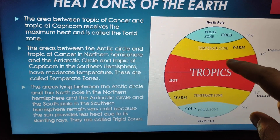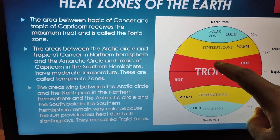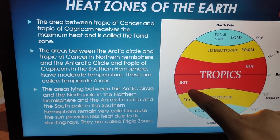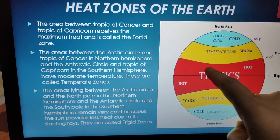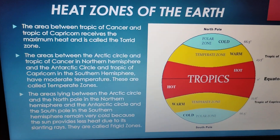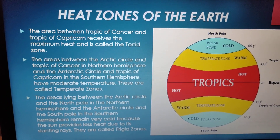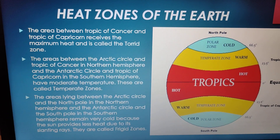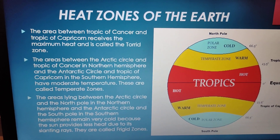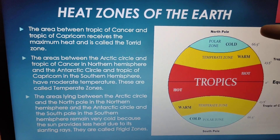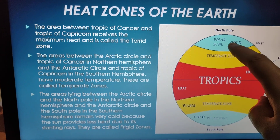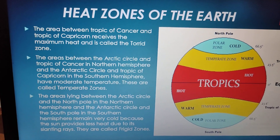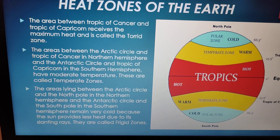The areas between the Arctic Circle and the Tropic of Cancer in the northern hemisphere, and the Antarctic Circle and the Tropic of Capricorn in the southern hemisphere — shown in yellow — have moderate temperatures. These are called temperate zones. The areas above the Arctic Circle toward the North Pole, and above the Antarctic Circle toward the South Pole, remain very cold because the sun provides less heat due to its slanting rays. These are called frigid zones.